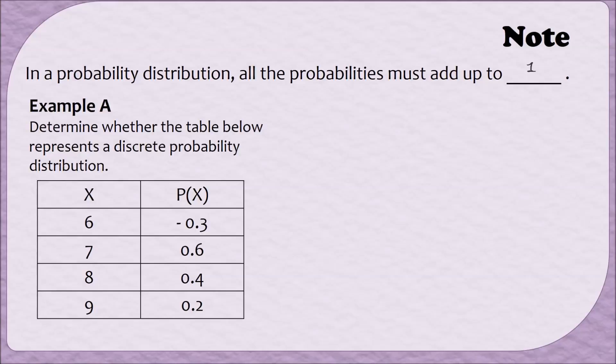And there are a couple of different ways that we can tell. First, notice that the probability of getting a 6 in this distribution is a negative 0.3. This literally has no meaning. There's no way to have a negative probability. So right off the bat with this first probability, we can tell that this table has something fishy about it. Another way that you could tell that this is not a probability distribution is by adding up all of the probabilities. When I add up these four values, I end up with 0.9, which would be like 90%. Since they don't add up to 1, this cannot be a probability distribution.